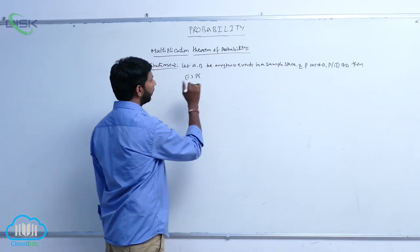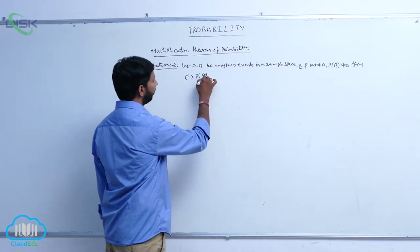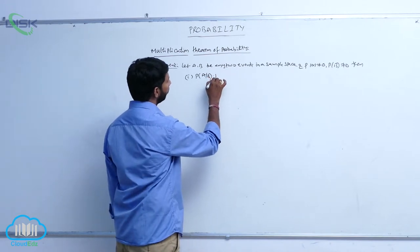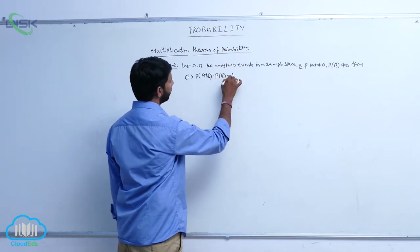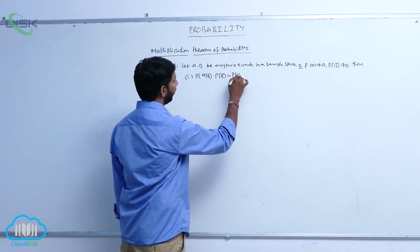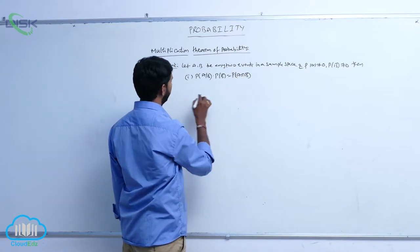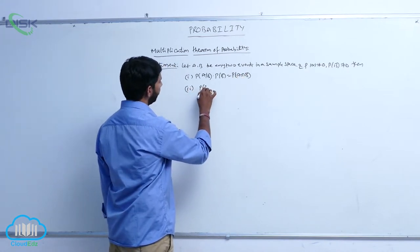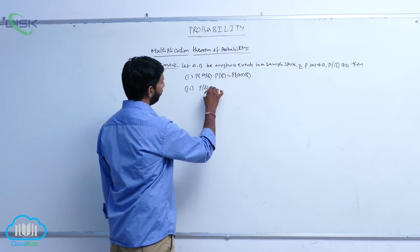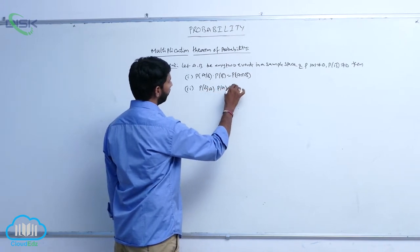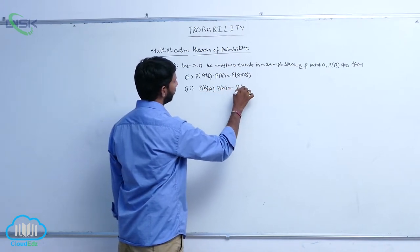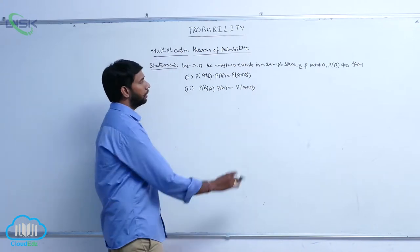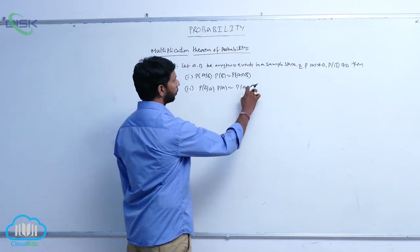Then P of A given B into P of B is equal to P of A intersection B. And P of B given A into P of A is equal to P of A intersection B. This is the Multiplication Theorem of Probability.